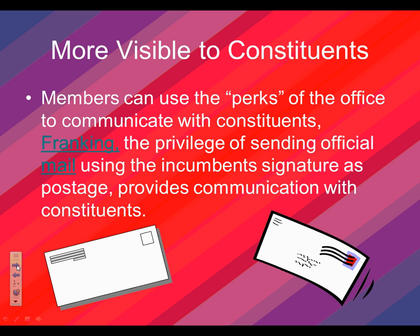More visibility to constituents comes through something called the franking privilege. When you are franking, you are able to use your signature as a postal stamp. You can sign the letter you're sending back to your constituents and that becomes the postage — you still pay for it, but you don't have to put a stamp on it. You literally just sign your name and can send that to your constituents to communicate with them. It's a way to help get name recognition, and it's a privilege only congressmen have — challengers do not.